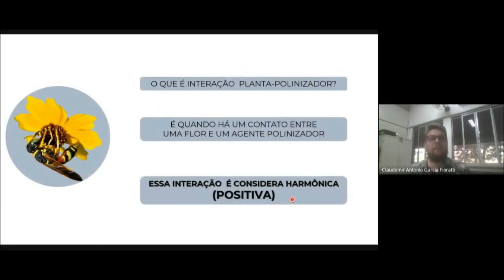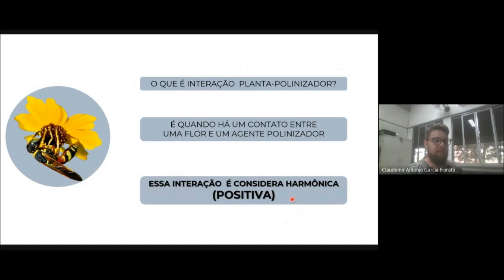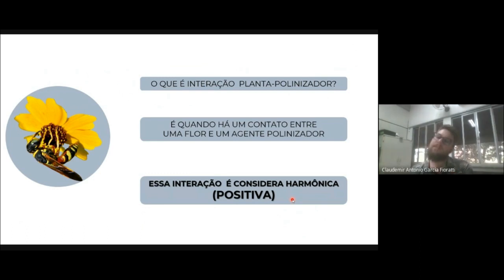A polinização nada mais é do que uma interação entre uma planta e um polinizador, e essa interação acontece quando esse inseto tem um contato entre a flor e um agente polinizador. Essa interação é considerada uma interação harmônica, uma interação positiva, em que tanto o inseto quanto os vários tipos de polinizador e a flor se beneficiam. O inseto vai se beneficiar com o recurso que a flor vai oferecer, que é o néctar, e automaticamente essa flor também é beneficiada porque é polinizada, conseguindo propagar a sua espécie.